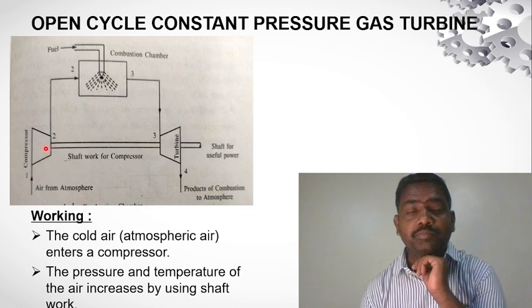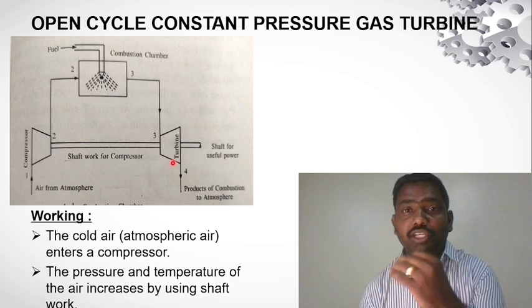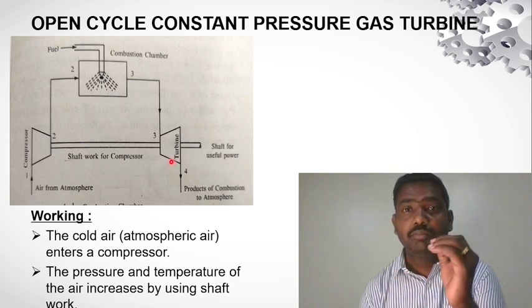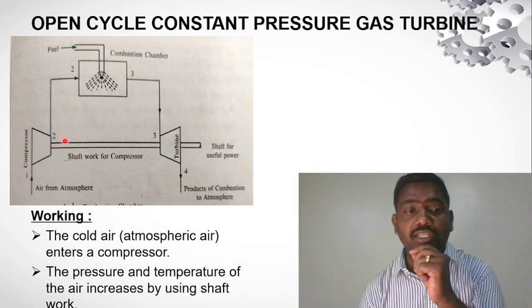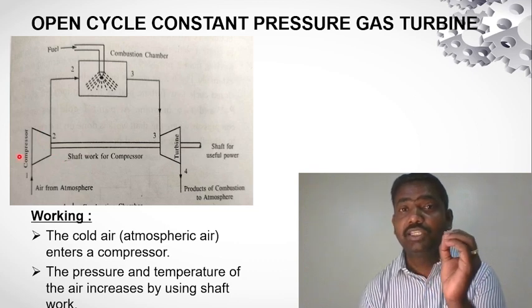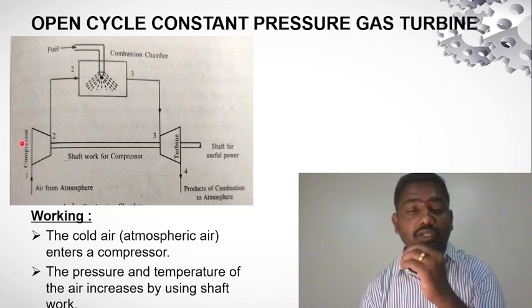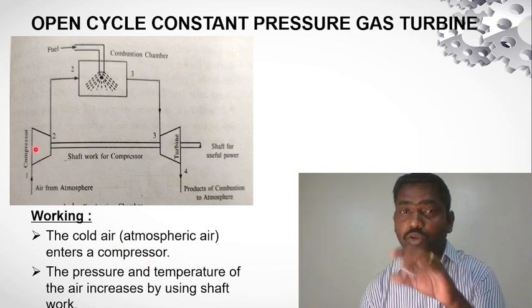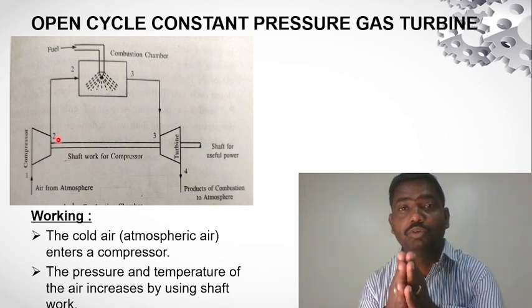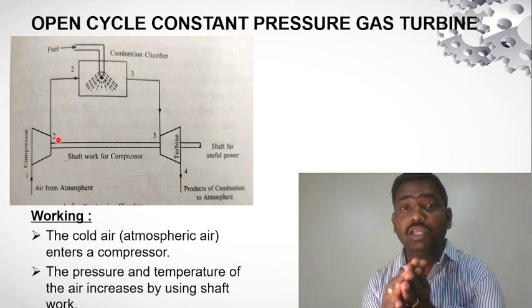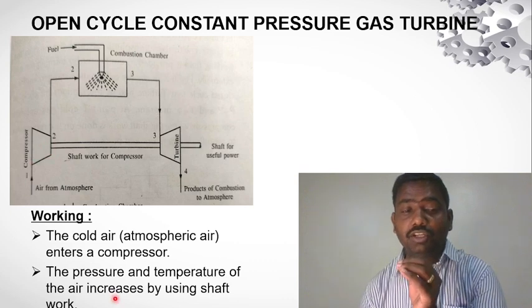If we look at how the turbine works — we rotate this turbine, rotating the shaft connected to the blades. The compressor draws air from the atmosphere. When we take the air into the compressor, we compress it, changing its pressure and temperature.